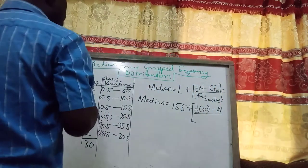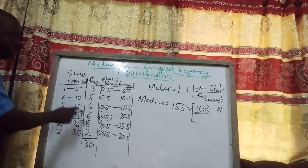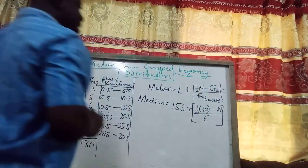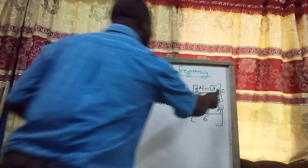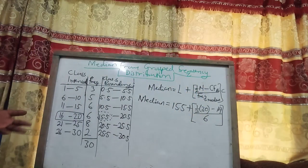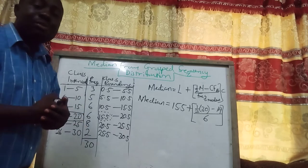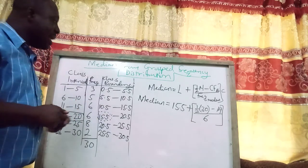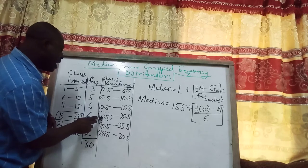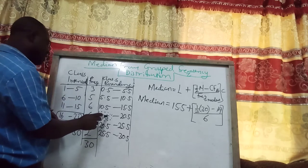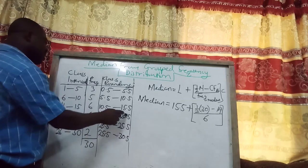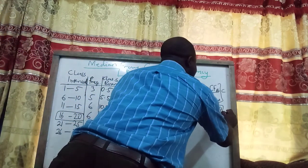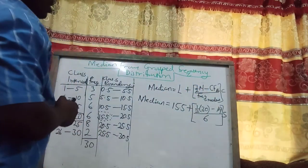The frequency of the median class is 6. The class size C is the difference between the lower class boundary (15.5) and the upper class boundary (20.5) of the median class: 20.5 − 15.5 = 5. So the class size is 5. The full expression becomes: 15.5 + (1/6) × 5.